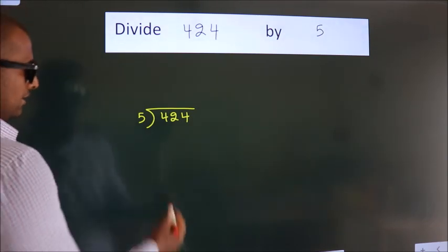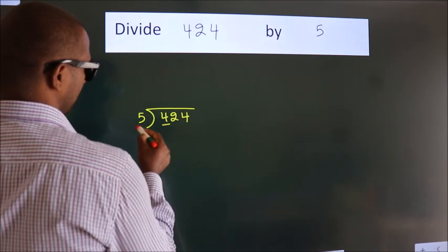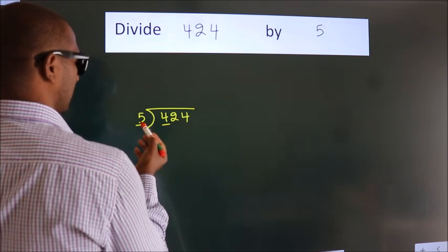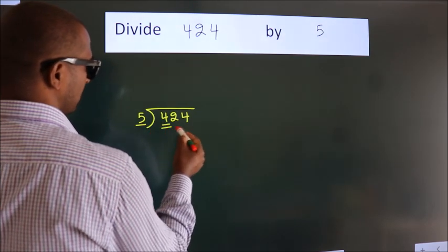Next. Here we have 4, here 5. 4 is smaller than 5, so we should take 2 numbers: 42.